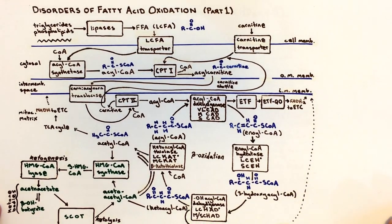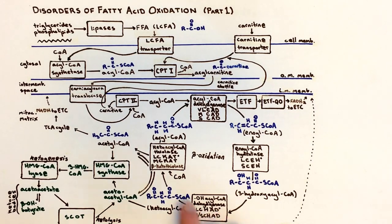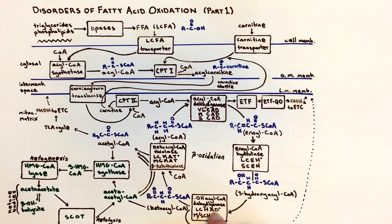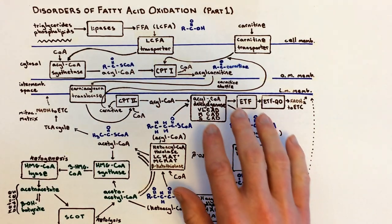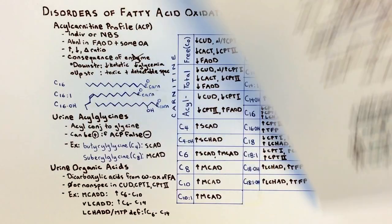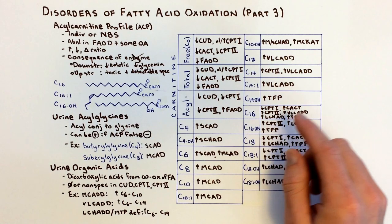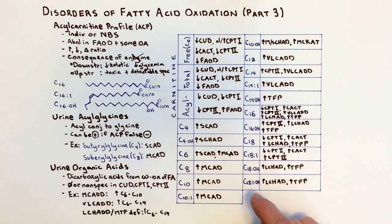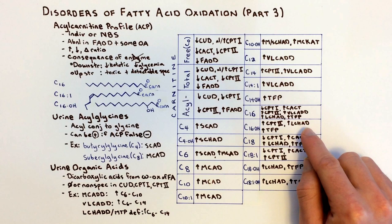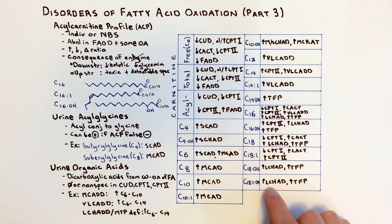Now let's look at a family of enzymes: LCEH, LCHAD, and LCKAT — all part of the mitochondrial trifunctional protein (TFP) enzyme — or an isolated mutation of the LCHAD functionality. Here you get a buildup of regular acylcarnitines as well as hydroxy-acylcarnitines. In TFP deficiency: increased C14OH, C16, C16OH, C18, C18OH, and C18:1OH. For isolated LCHAD deficiency: increased C16, C16OH, C18, C18OH, and C18:1OH.